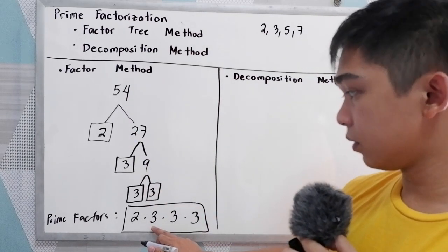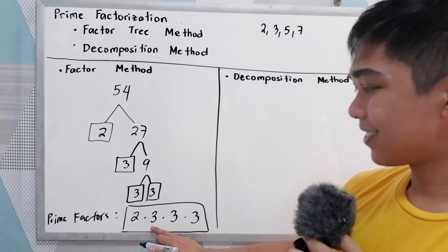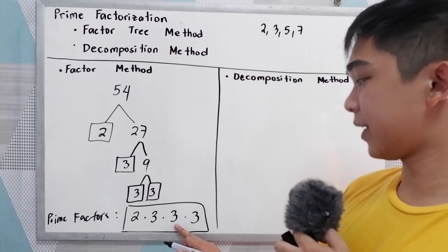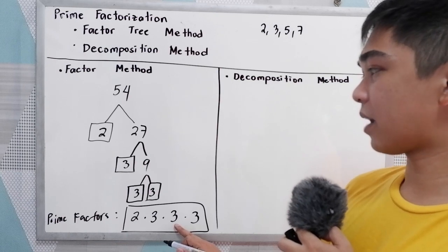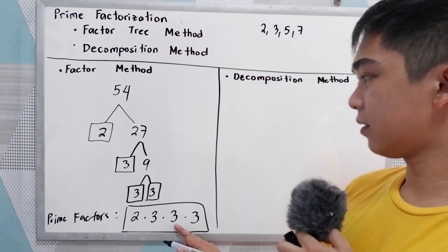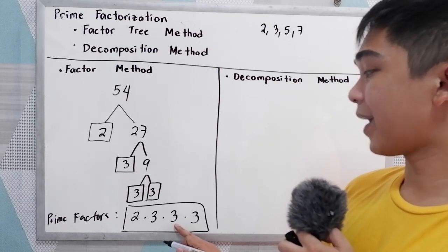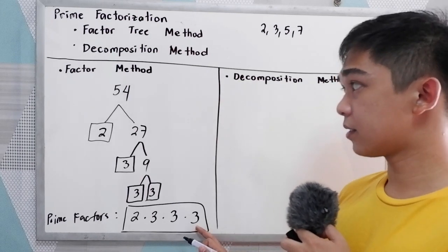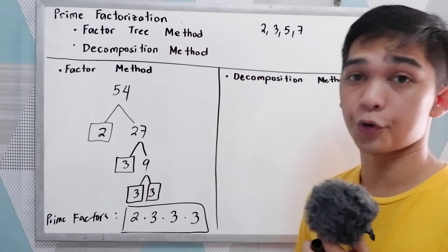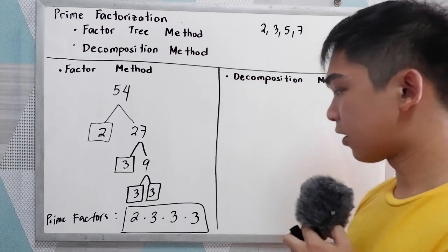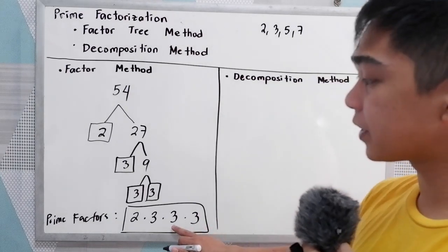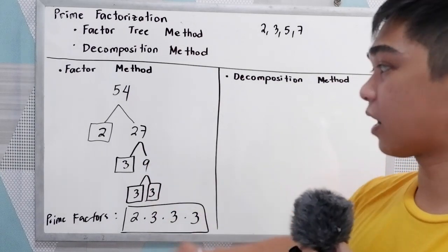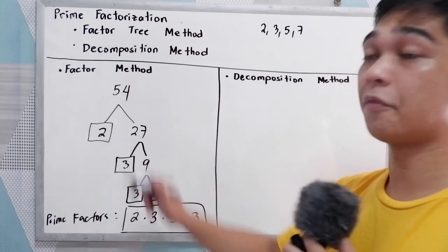To verify: 3 times 2 is 6, times 3 is 18, times 3 is 54. Or in reverse: 3 times 3 is 9, times 3 is 27, times 2 is 54.